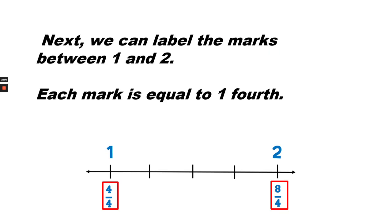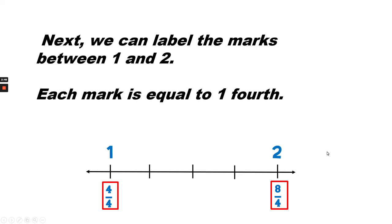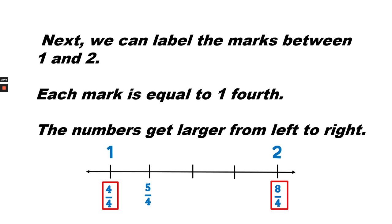Next, we can label the marks between one and two. Each mark is equal to one fourth. So the number line starts at one, which is equivalent to four fourths. If we go up one fourth, that means we add one part to the top. So the next mark will be five fourths. And each mark is equal to one fourth, so the numbers get larger by one fourth going from left to right. So we started at four fourths, next is five fourths, six fourths, seven fourths, and eight fourths.